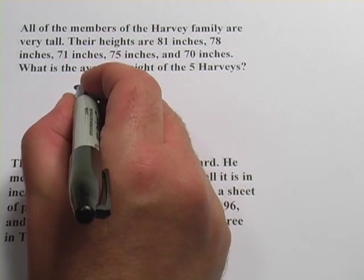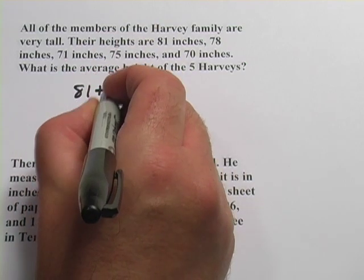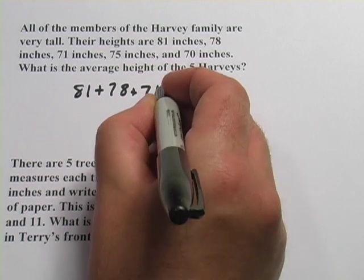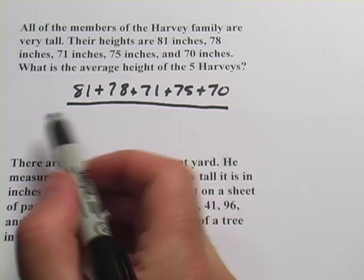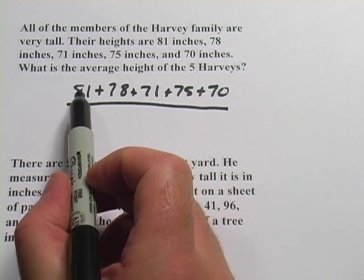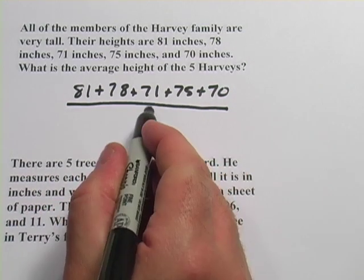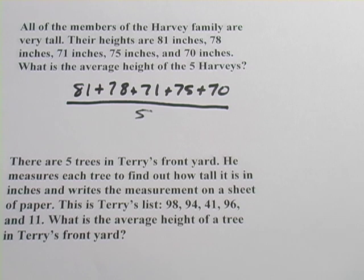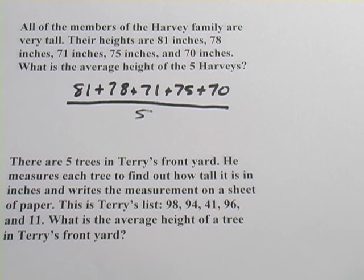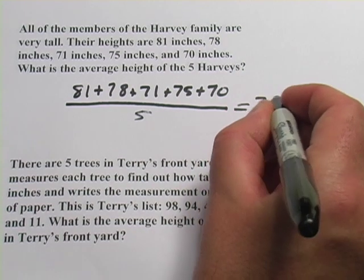So you have to add them all up: 81 plus 78 plus 71 plus 75 plus 70. And then you have to divide that by the number of people — one, two, three, four, five — so we're going to divide that by five. I'm going to do this on my calculator: 81 plus 78 plus 71 plus 75 plus 70, divide by five, and I get an average of 75.